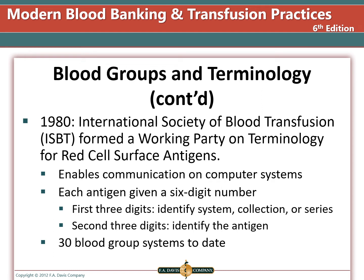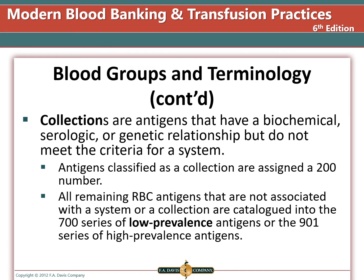In 1980, ISBT formed a working party on terminology for red cell surface antigens. This enables communication on computer systems, with each antigen given a six-digit number — the first three digits identifying the system, collection, or series, and the second three digits identifying the antigen. There are 30 blood group systems to date. Collections are antigens with a biochemical, serological, or genetic relationship but do not meet the criteria for a system and are assigned a 200 number. Remaining red cell antigens are cataloged into the 700 series of low prevalence antigens or the 901 series of high prevalence antigens.